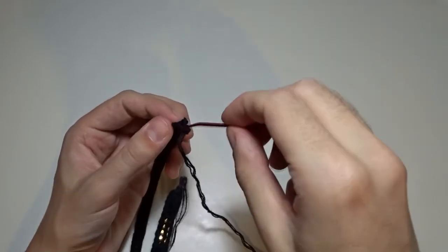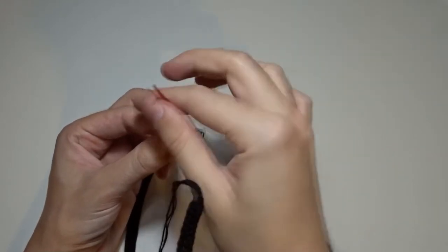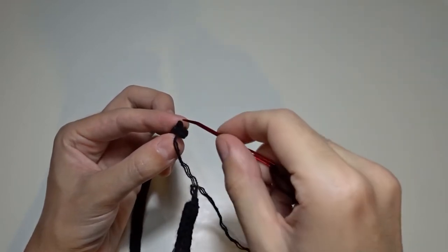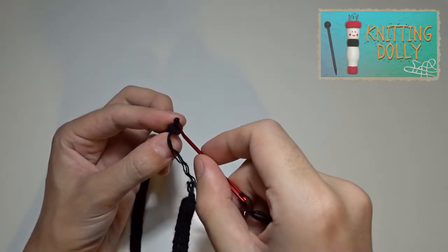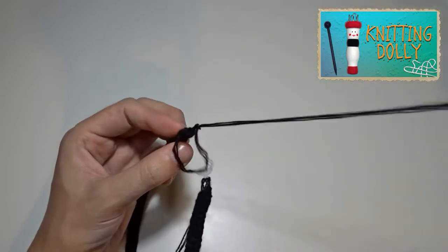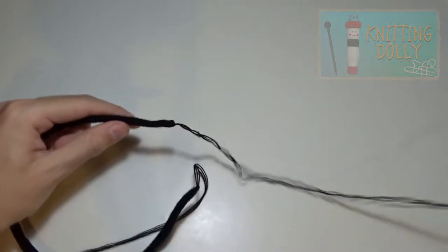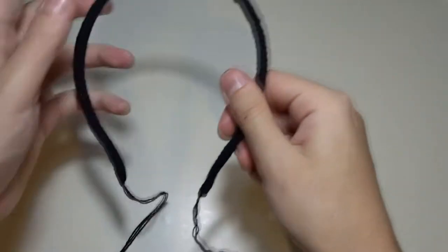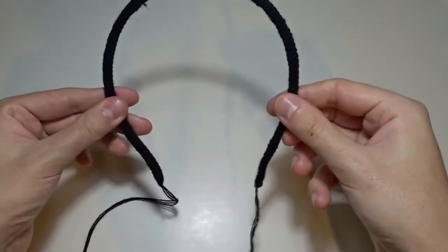By the way, you can use your knitting machine or a knitting doll to make the eye cord. You can learn how to use the knitting doll by clicking on the info card in the upper right corner. Now hide the yarn tails, and the diadem is fixed.